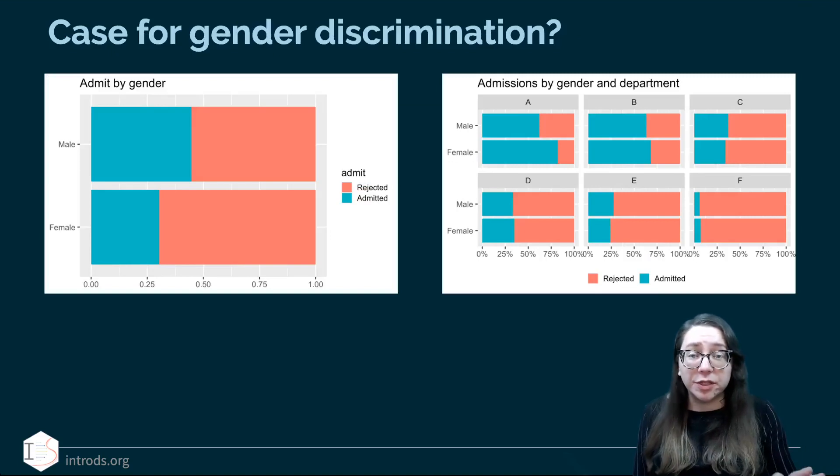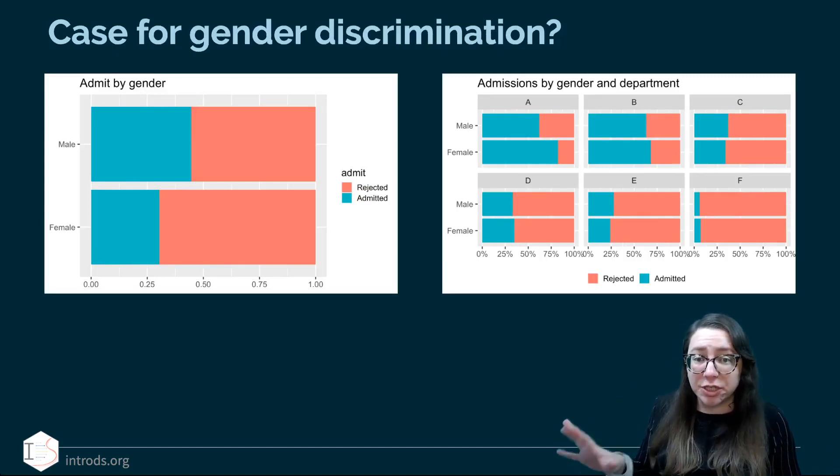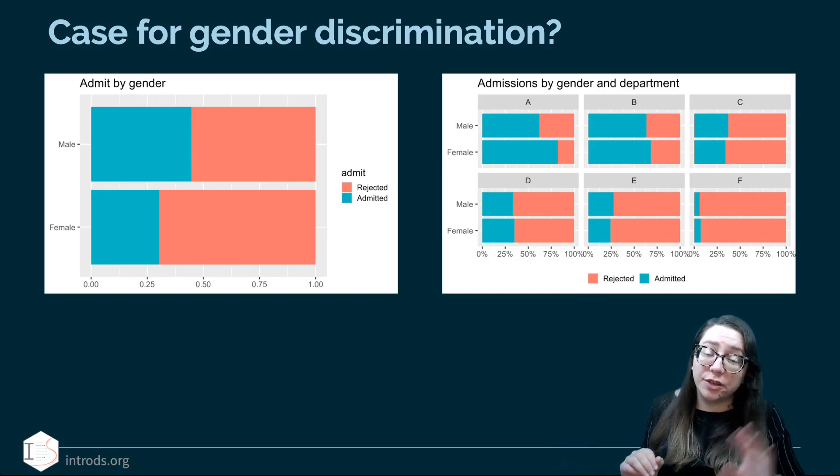So here are the two pictures we looked at side by side. First one is admissions by gender and the other one is admissions by gender and department. They seem to be telling a slightly different story. So what happened here?